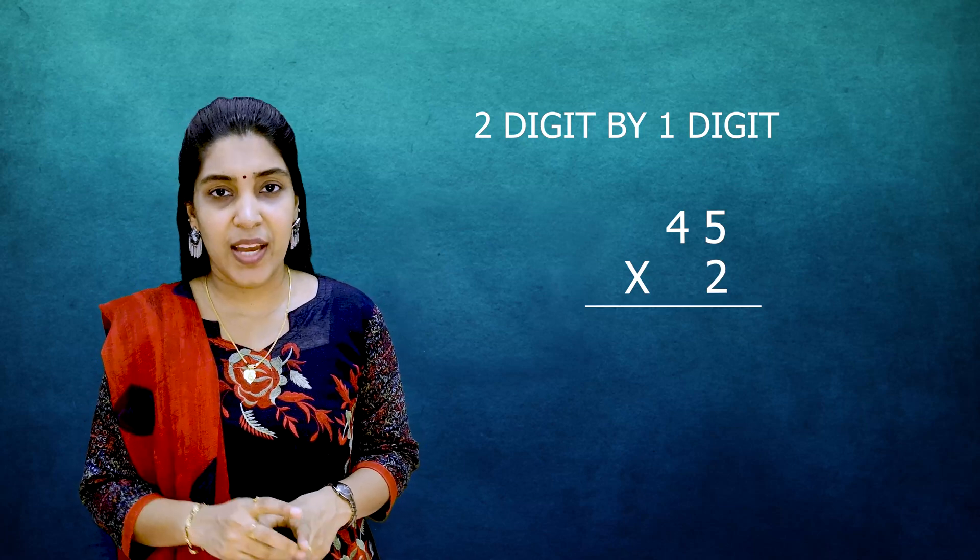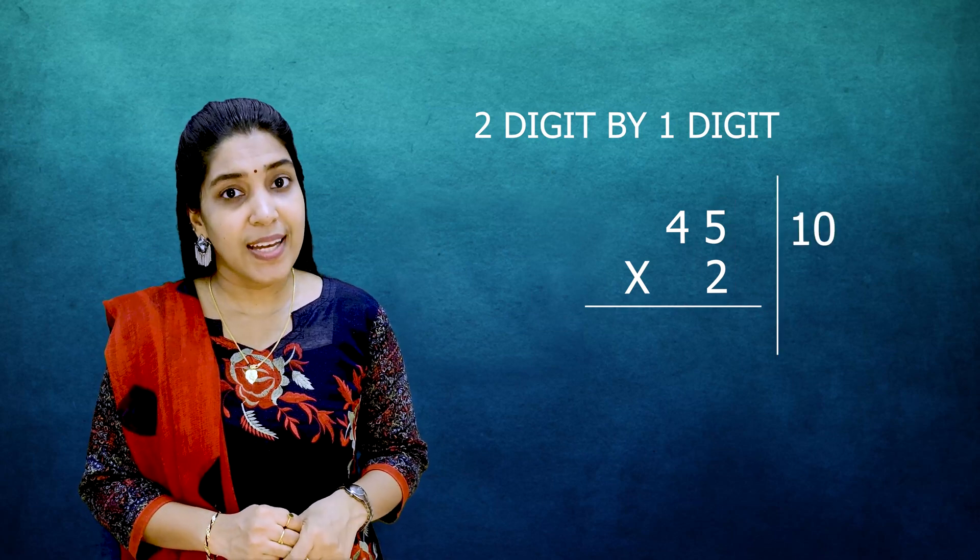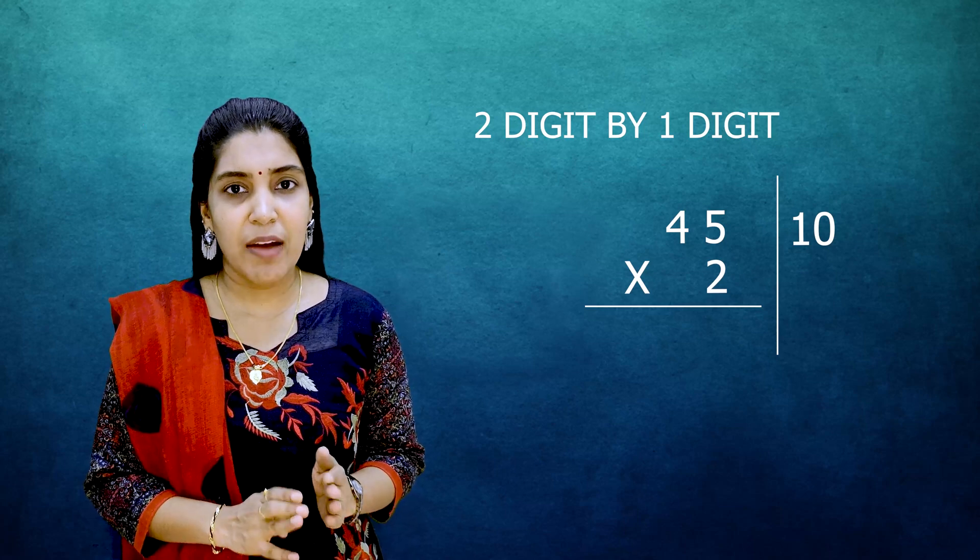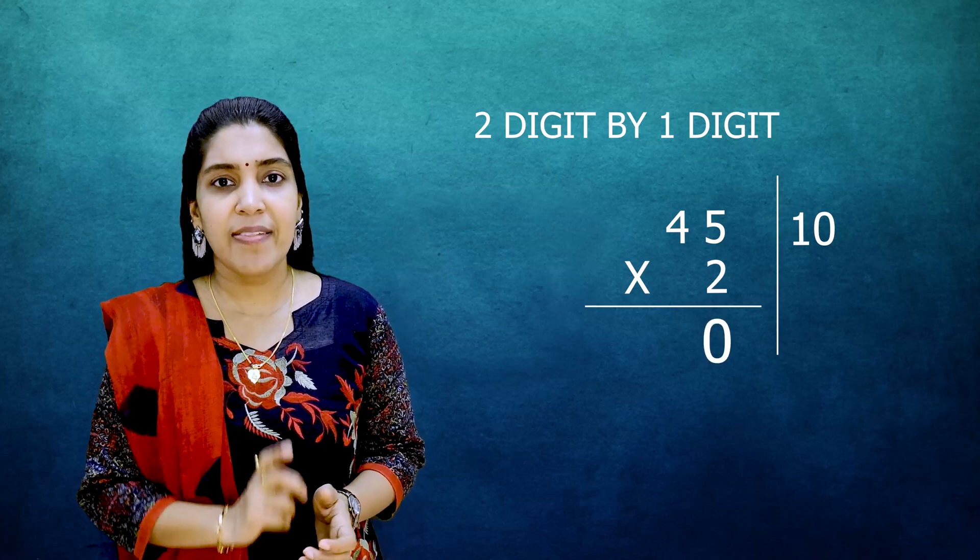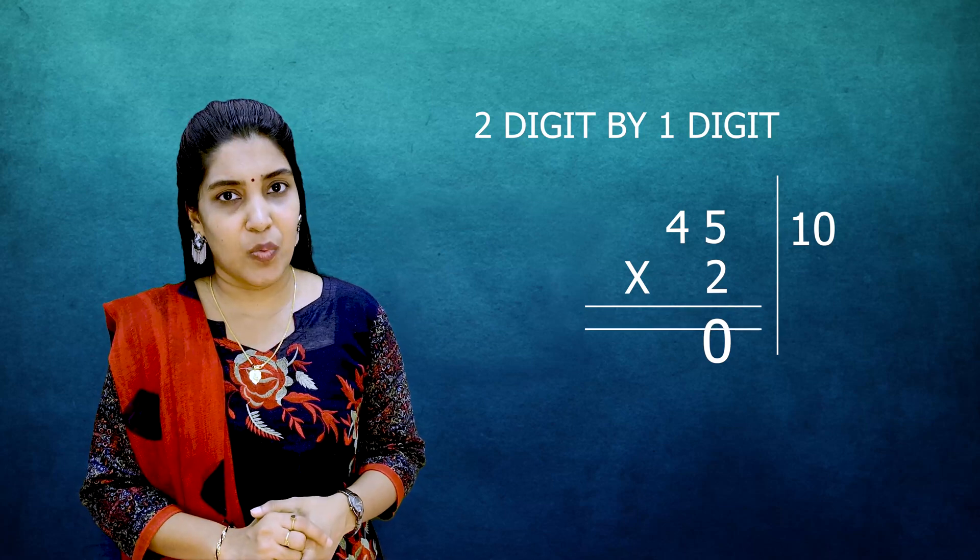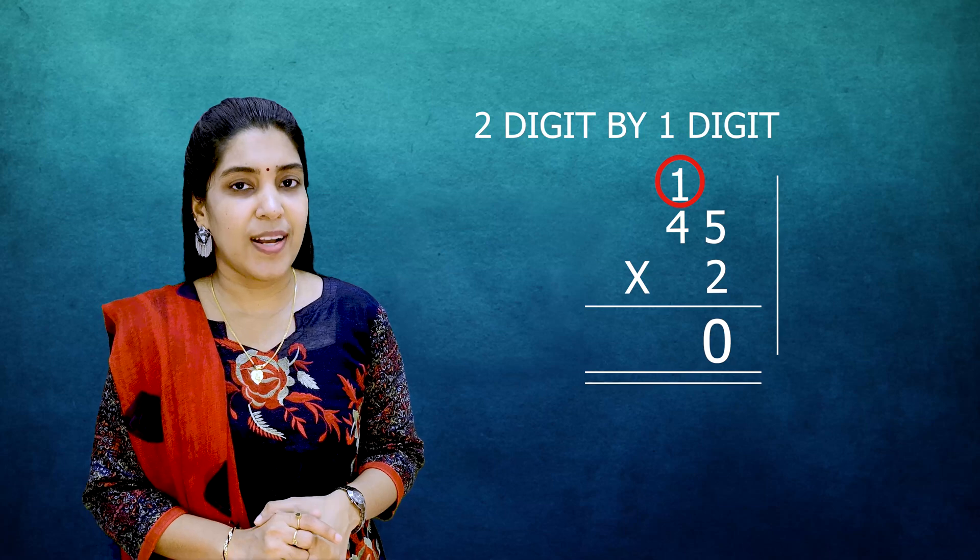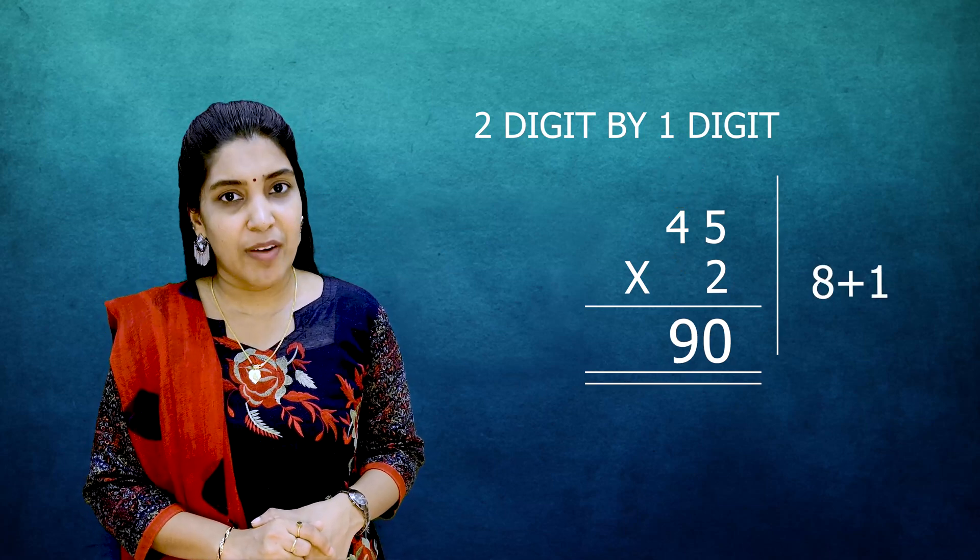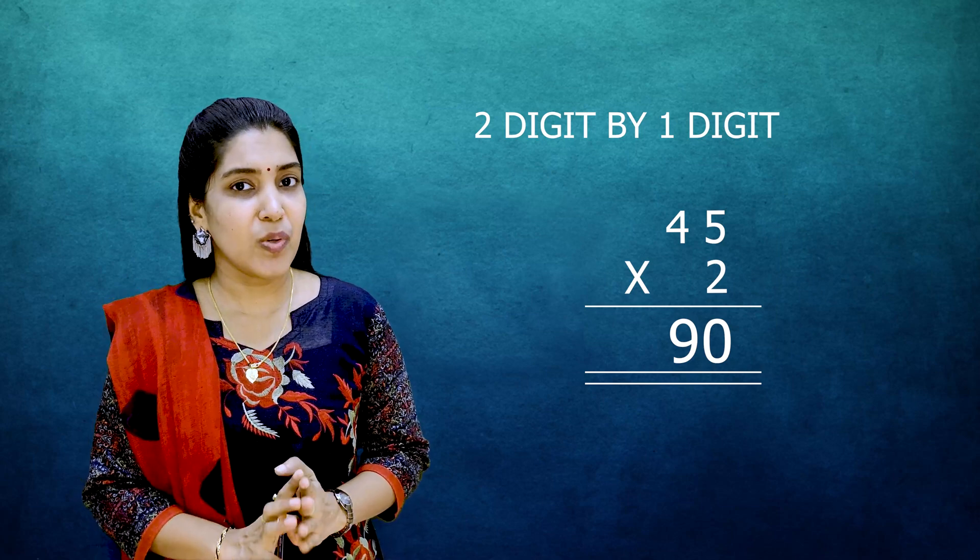So first we have to start the calculation from right to left. 5 2s are 10. So you can't write the 2 digits together. You have to write 1 digit in 1 space and the tens digit as carryover. So 0 down, 1 as carryover above 4. Then 4 2s are 8 plus 1 equals 9. So our answer is 90. This is the way we have to calculate.